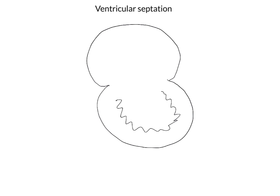The other landmark I want to add is the presence of the endocardial cushions. It's important that we include the endocardial cushions because both the interatrial and the interventricular septa need to fuse with the endocardial cushions in order to completely separate the heart into left and right sides, and hence pulmonary and systemic circuits.